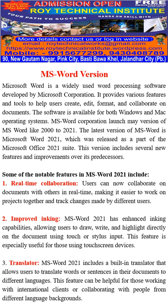Microsoft Corporation has launched many versions of MS Word from 2000 to 2021. The latest version is Microsoft Word 2021, which was released as part of the Microsoft Office 2021 suite. This version includes several new features and improvements. Notable among these is real-time collaboration — users can now collaborate on documents with others in real-time, making it easier to work on projects together and track changes made by different users.